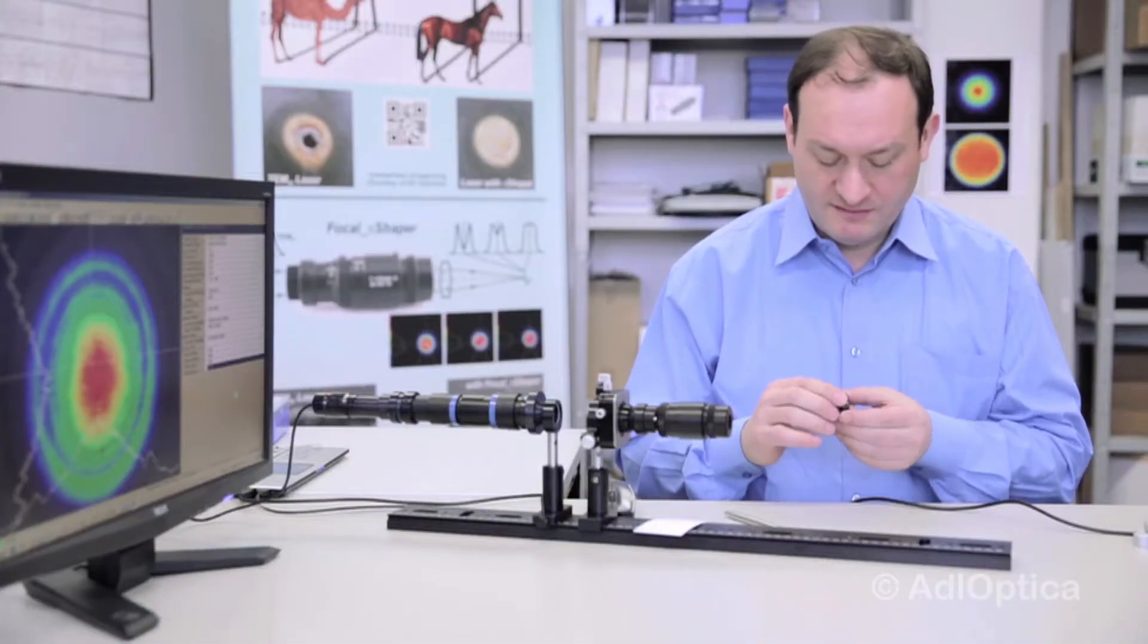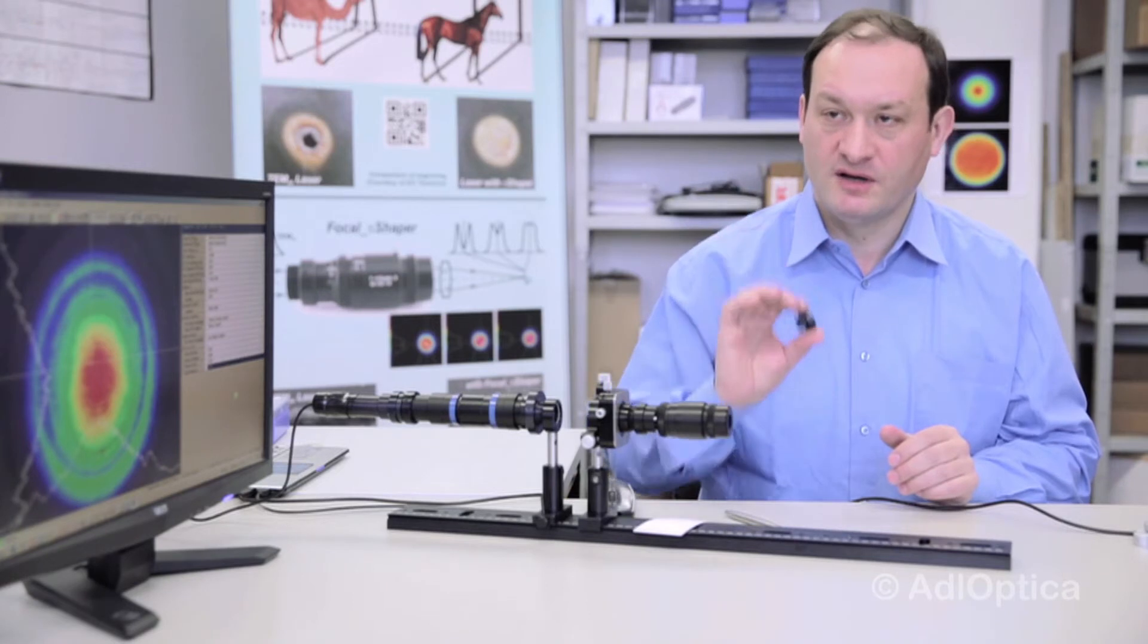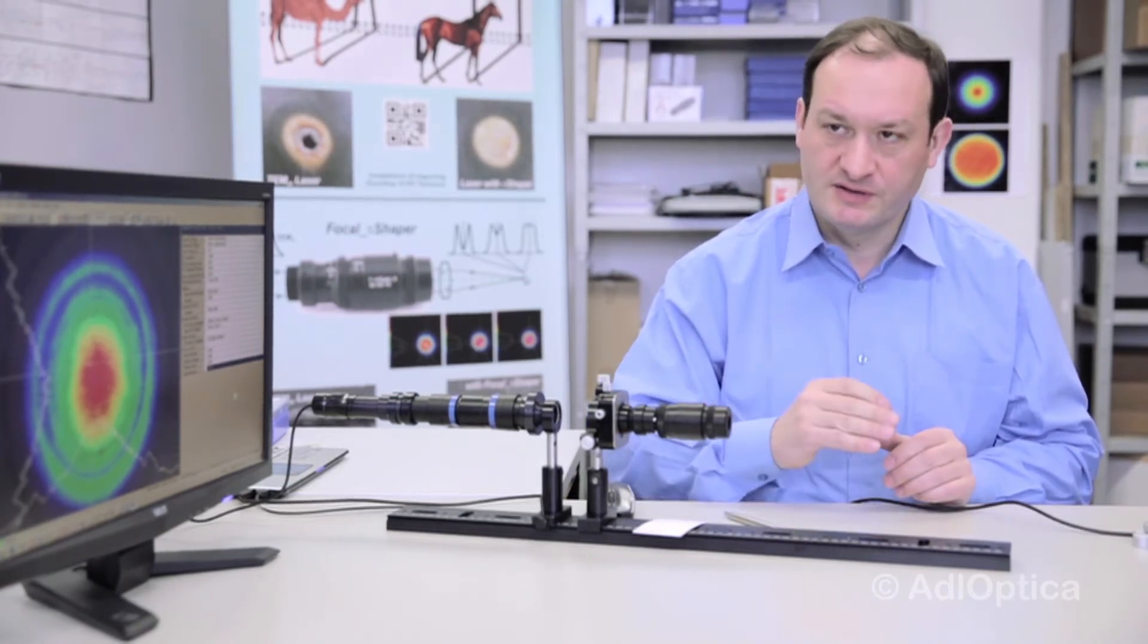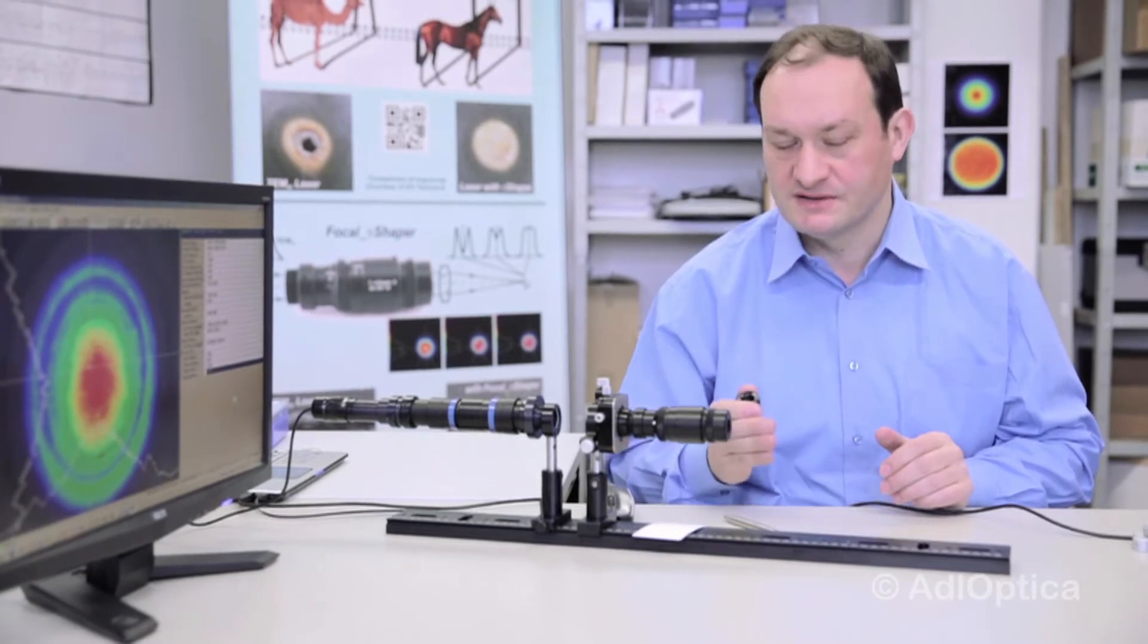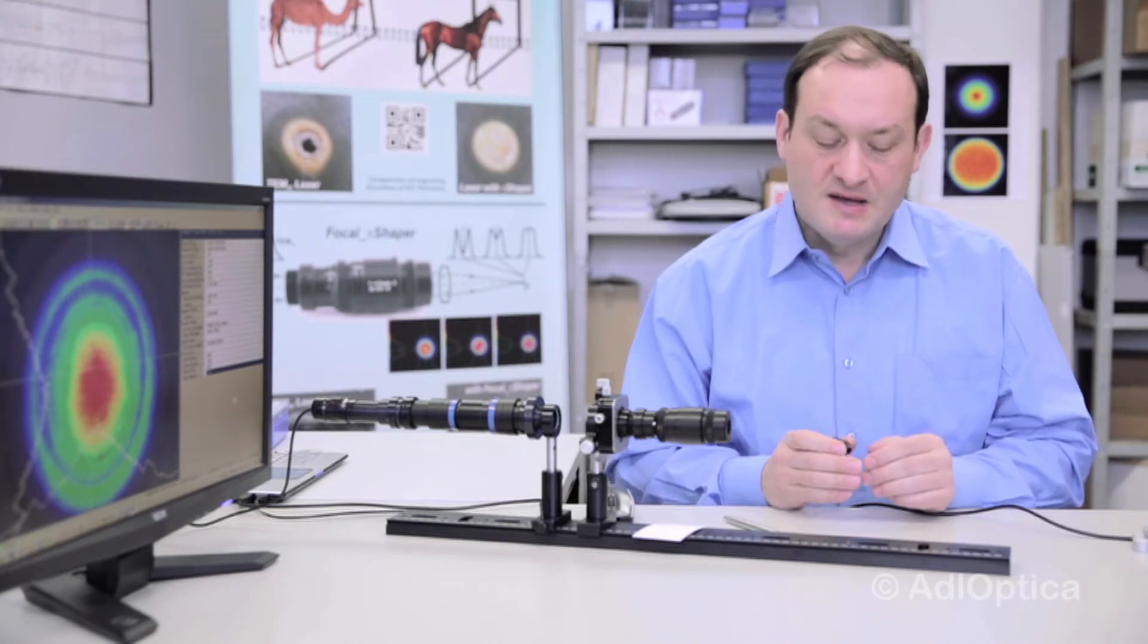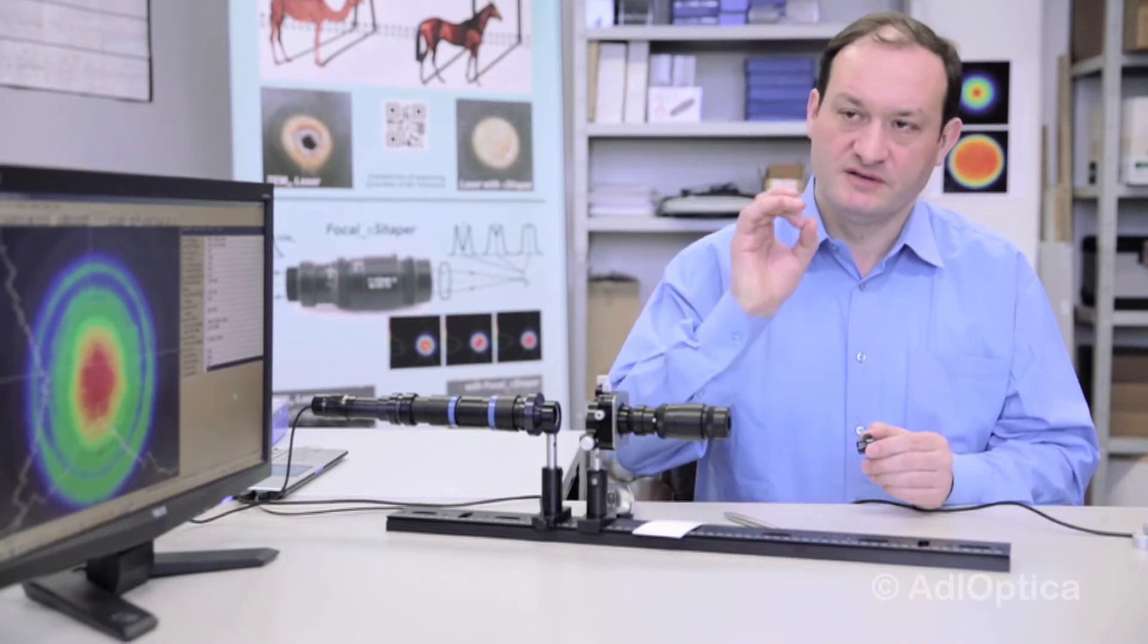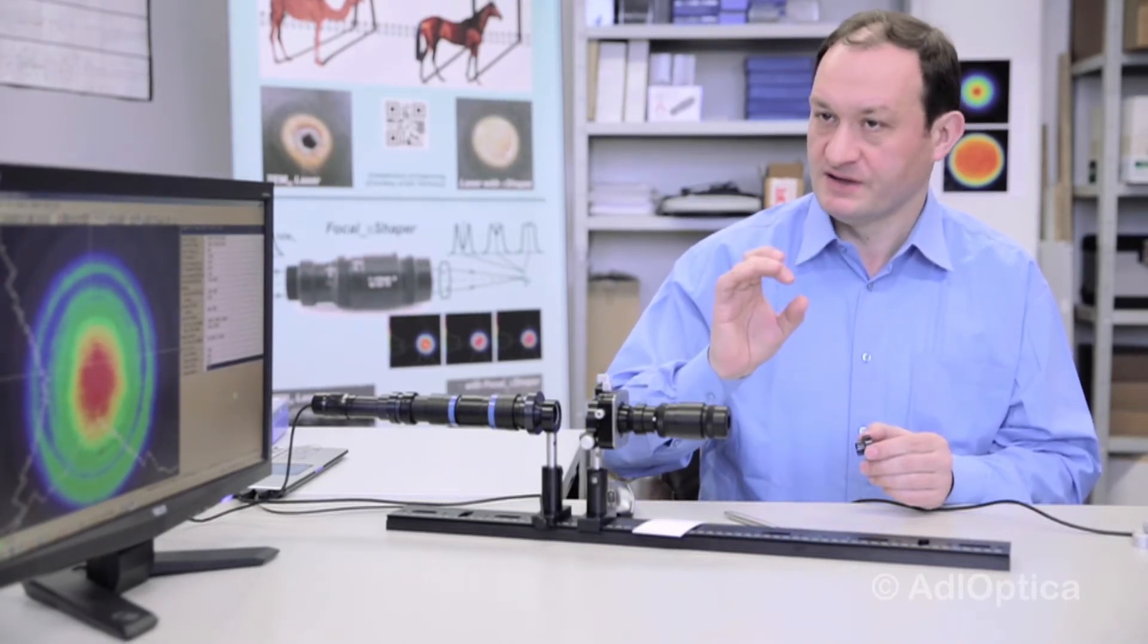And now since we have to realize a focus spot, we will use a one meter lens for alignment purposes. Of course in real life, in real equipment, in real applications people use different lenses with shorter focal lengths, 100, 200 or several millimeters. It depends on the application, but for alignment purposes it is very convenient to use a one meter lens because the final spot will be several hundredths microns size.